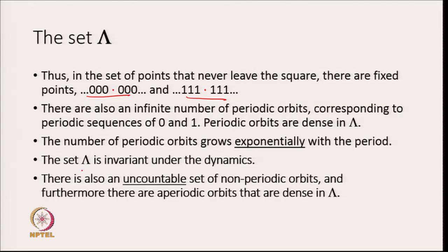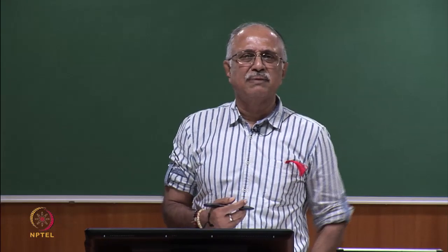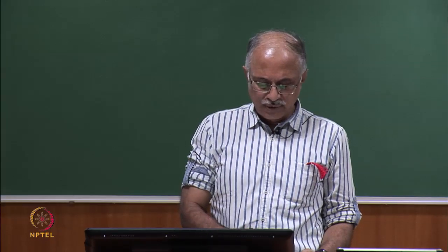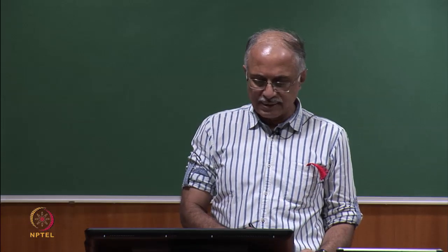The number of periodic orbits grows exponentially with the period — it is just the number of sequences of two symbols of length n. Lambda is an invariant set: once you are in this set, the dynamics keeps you circulating inside it. There are an uncountable number of non-periodic orbits, and furthermore aperiodic orbits are dense in lambda. This dynamics is extremely complicated, but the horseshoe gives a very simple model for it.